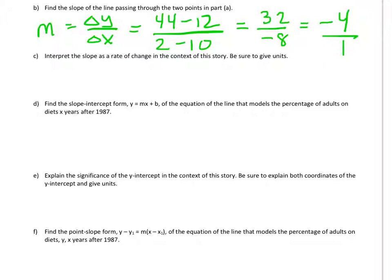And y was the percent of the country on a diet, and x was time in years since 1987. So our interpretation is going to be